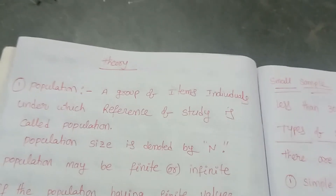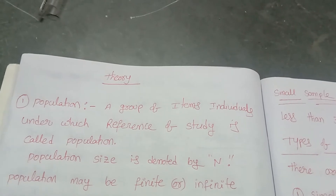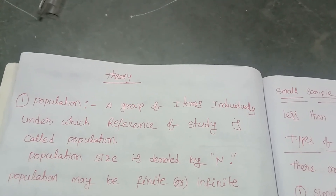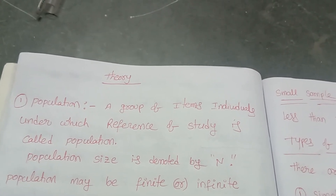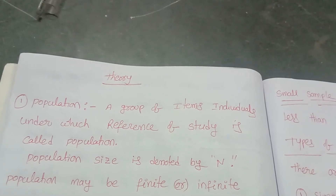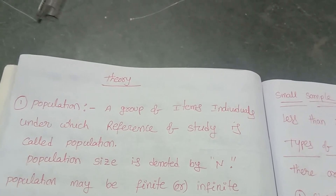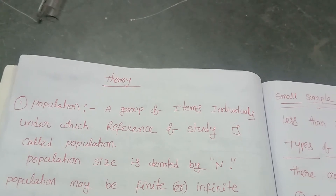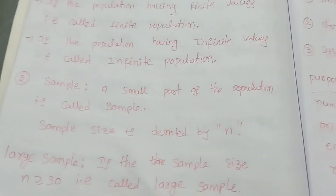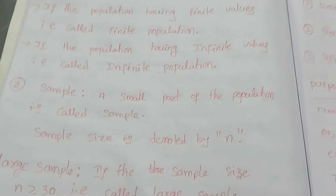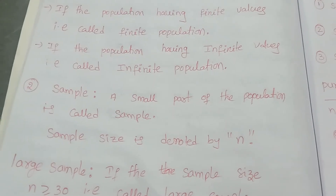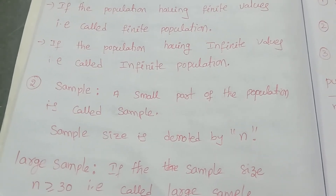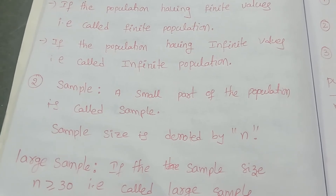For example, suppose I am taking your class. Your class may have 55 students. Those 55 students come under my population. Suppose I am calculating your class average percentage — for that I consider all 55 students, that is called my population. From those 55 students I am taking only randomly 10 members — that is my sample.